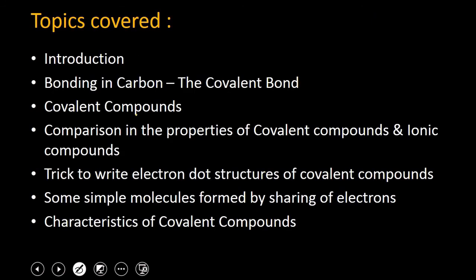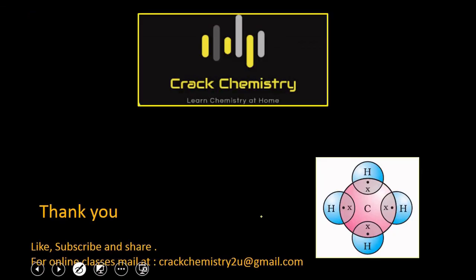So children, I hope all these points are clear to you. Let us summarize what we discussed today: the introduction to carbon, bonding in carbon and the covalent bond, what are covalent compounds, comparison of properties of covalent compounds and ionic compounds, the trick to write the electronic dot structure of covalent compounds, some simple molecules formed by sharing of electrons, and the characteristics of covalent compounds. In case of any doubt, post your questions in the comment box. Subscribe my channel, press the like button, share the video with your friends, and don't forget to watch Carbon and its Compounds Part 2. Thank you so much and have a nice day.